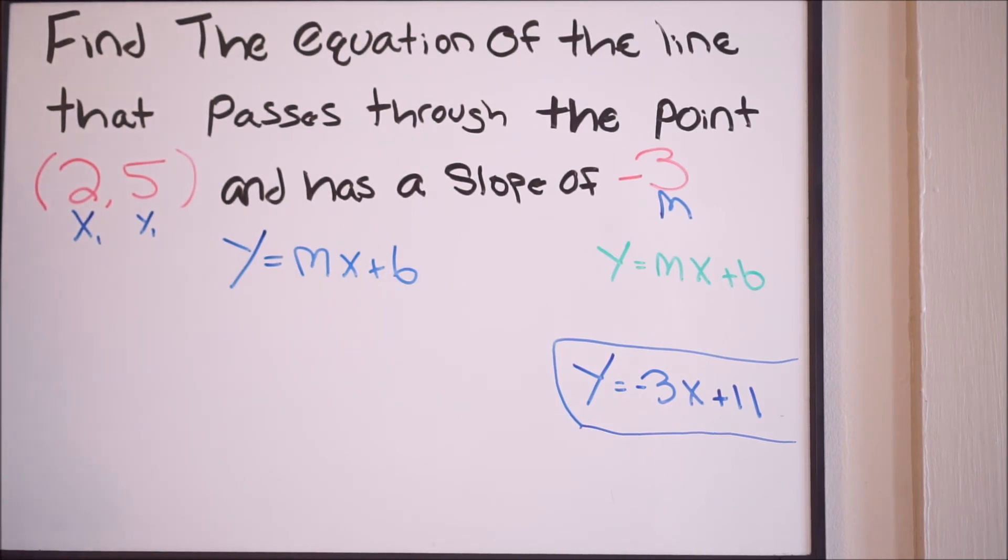And essentially what you're going to do here is you're going to solve for b, and then you're going to write your final answer. For example, we have both an x and a y right here. We also have a slope, negative 3.